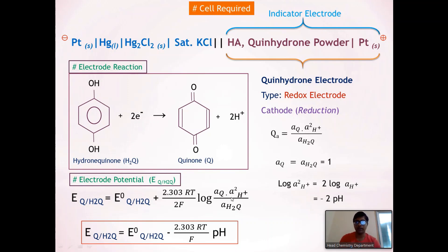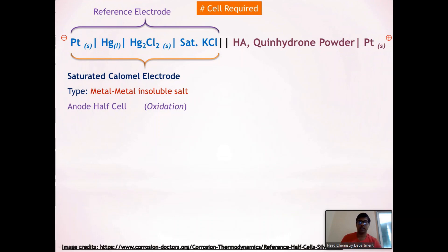The EMF of the quinhydrone electrode depends on pH, and pH depends on concentration of H⁺ ions. Therefore, the quinhydrone electrode is used as an indicator electrode — remember this equation, as we will use it in the next session. The second electrode is the reference electrode. The saturated calomel electrode is the reference electrode because it is an electrode of known potential.